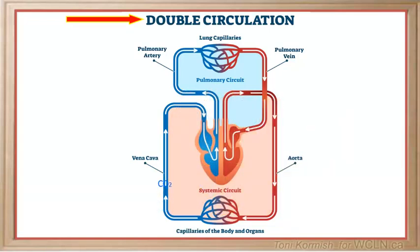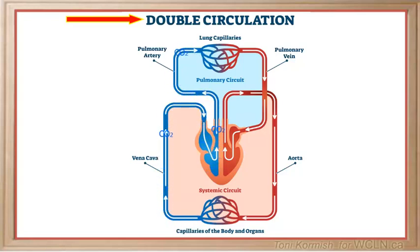The vena cava delivers spent blood to the right atrium of the heart. The right atrium contracts to force the spent blood into the right ventricle. The right ventricle then contracts to send the blood through the pulmonary circuit to the lungs.